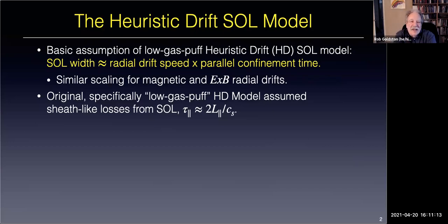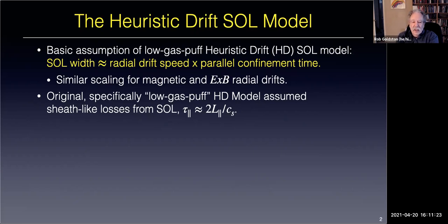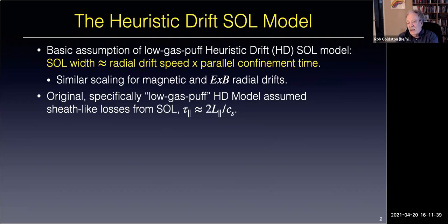The basic assumption of this model is that you get a width by multiplying a radial drift speed times a parallel confinement time, with a similar scaling for magnetic and E-cross-B radial drifts. Originally, this was specifically a low gas puff model—as in the title of the 2011 paper.